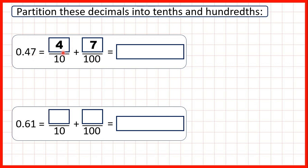We can also write the partition in decimal form. So four tenths is 0.4 as a decimal because the first digit after the decimal point shows tenths, and then seven hundredths is 0.07 as a decimal because the second digit after the decimal point is the hundredths digit.